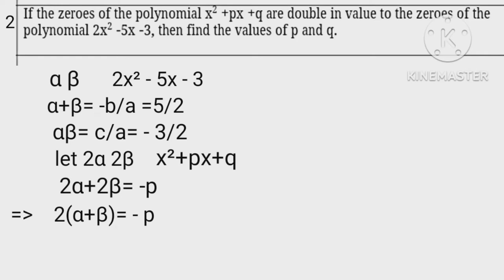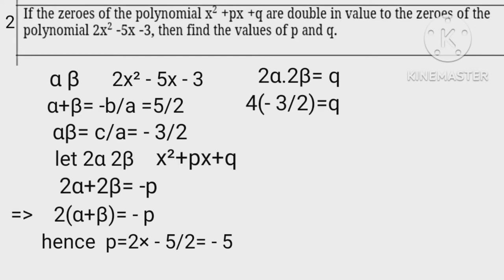Hence p equals 2 into 5 upon 2 equals 5. Similarly, 2 alpha into 2 beta equals q. 4 times minus 3 halves equals q, implies that q equals minus 6. Hence p equals 5, q equals minus 6.